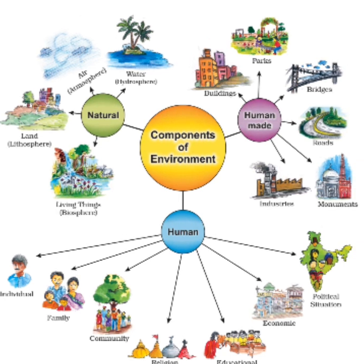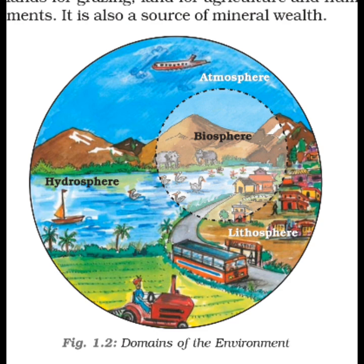Our components of environment also include human environment. Our environment includes the human presence — we need our family, friends in our environment. Our environment is only complete with individuals. Human environment includes individuals, family, friends, our community, our religion, our economic system, our political system, and our educational system. Natural environment includes lithosphere, hydrosphere, atmosphere, and biosphere.